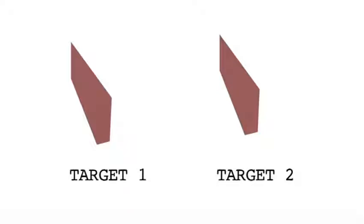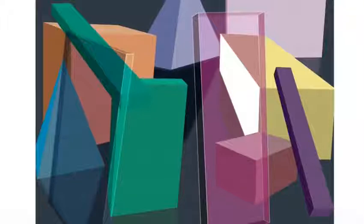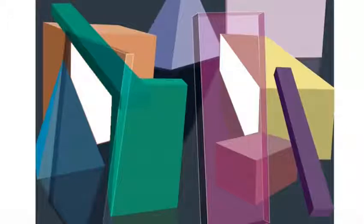Imagine that this is the back of your eye, and these are two projections from the world. They're identical in every single way — identical in shape, size, spectral content. They are the same as far as your eye is concerned. And yet they come from completely different sources. The one on the right comes from a yellow surface in shadow, oriented facing the left, viewed through a pinkish medium. The one on the left comes from an orange surface, under direct light, facing to the right, viewed through a bluish medium. Completely different meanings, giving rise to the exact same retinal information.